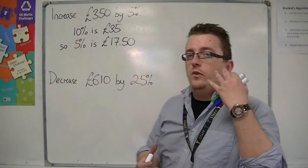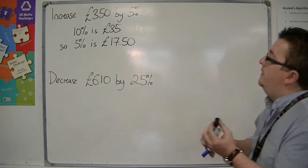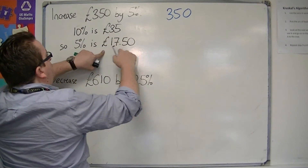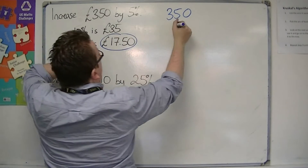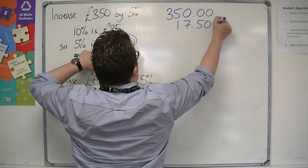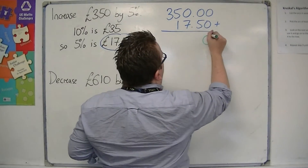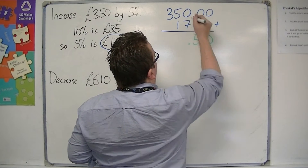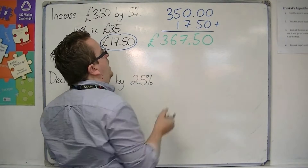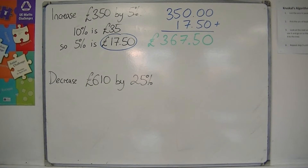So to increase £350 by 5%, I must add the £350 to the extra 5%, which is £17.50. So we get £367.50. And that's how we can calculate it.